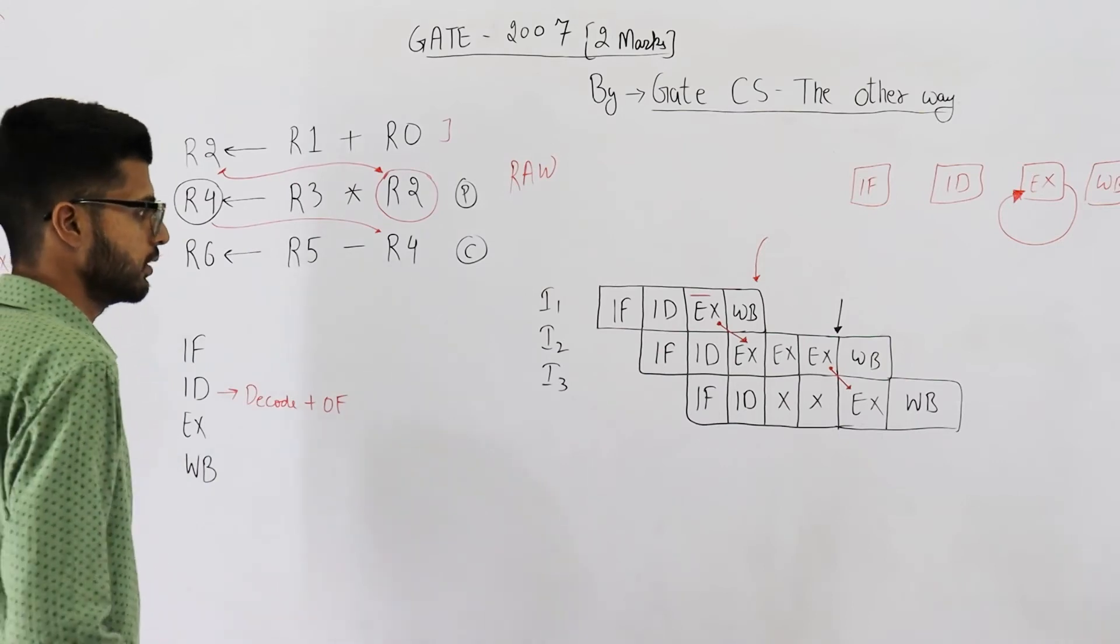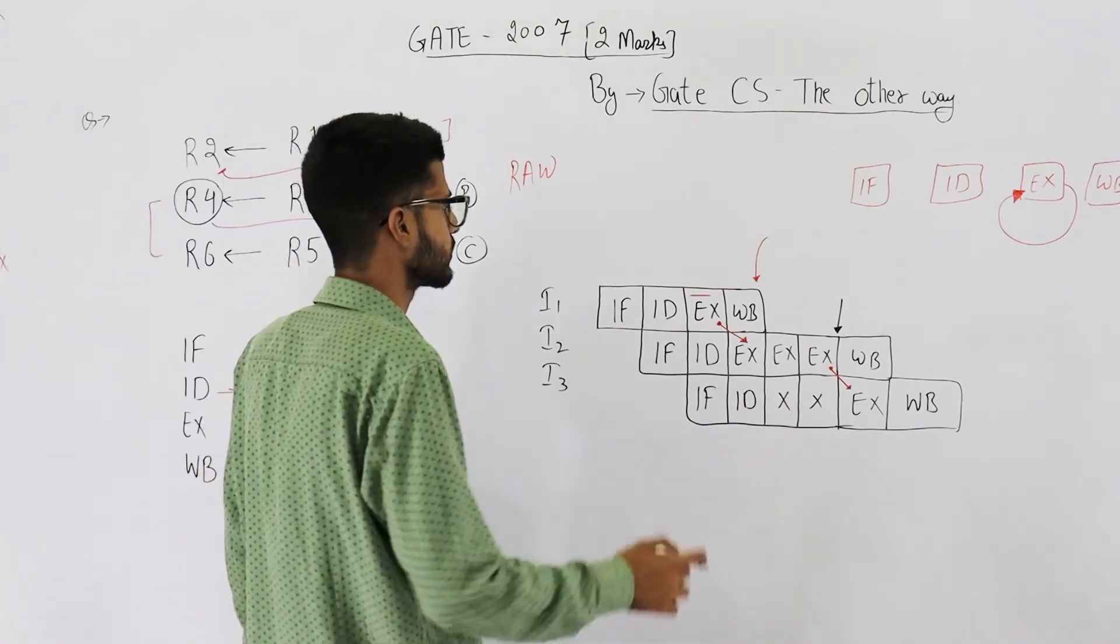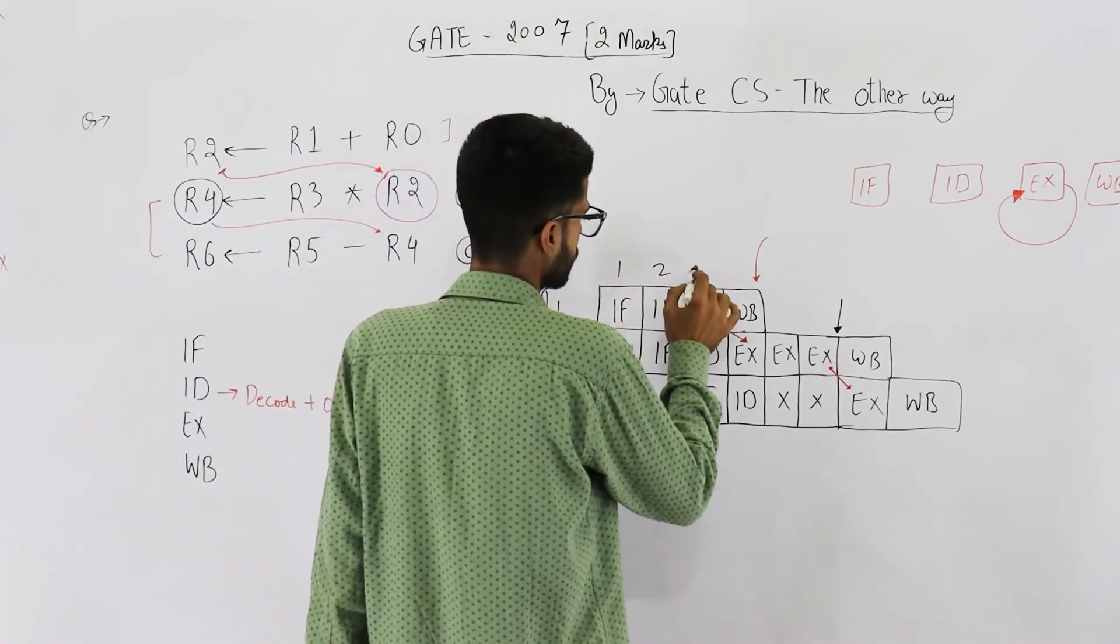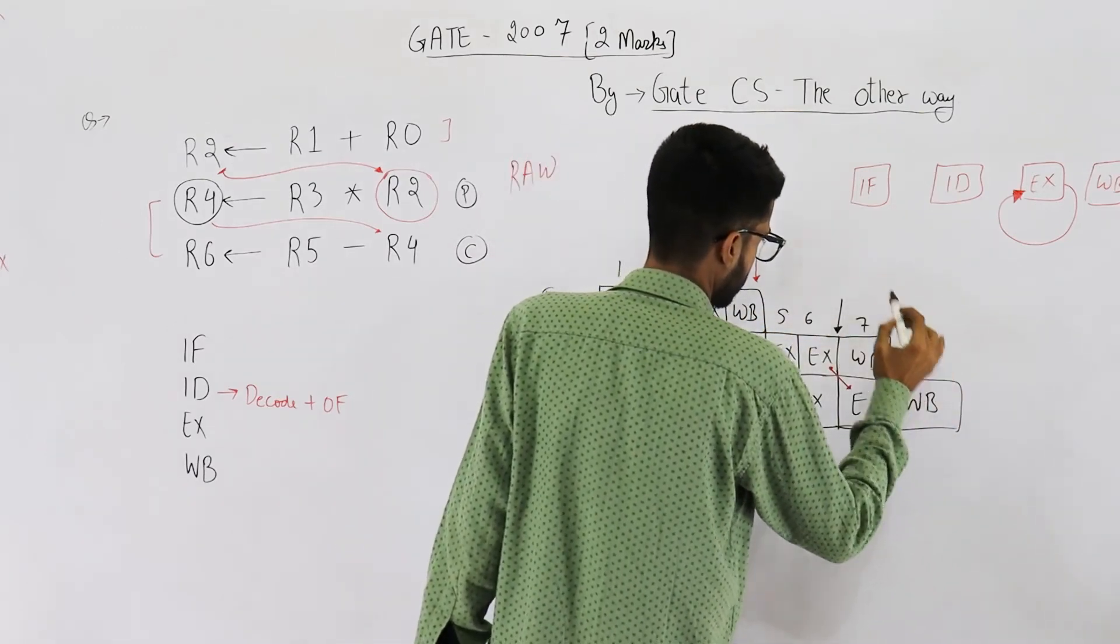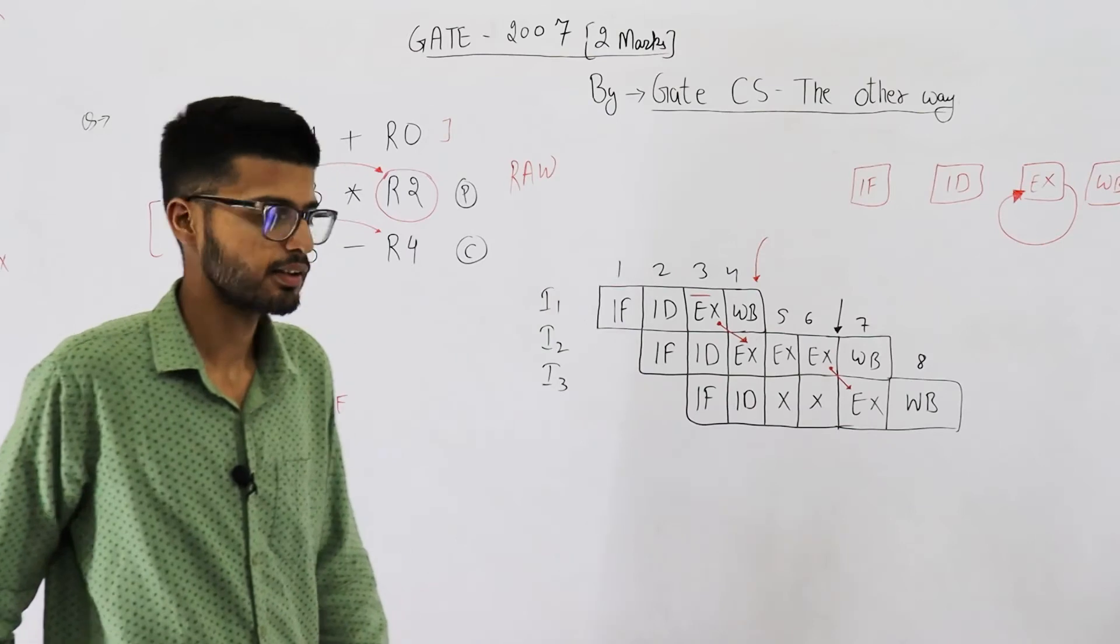Let's see how many clock cycles are required in total. It's 1, 2, 3, 4, 5, 6, 7, and 8. So your answer is 8.